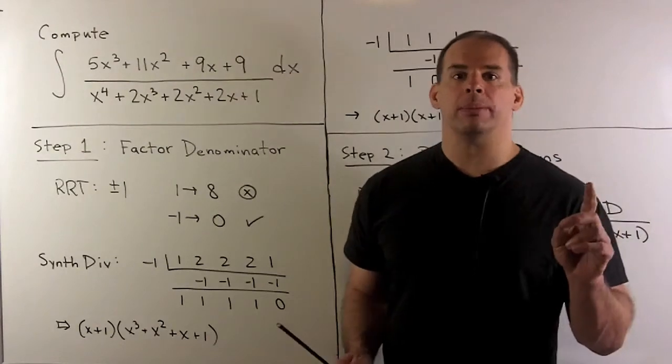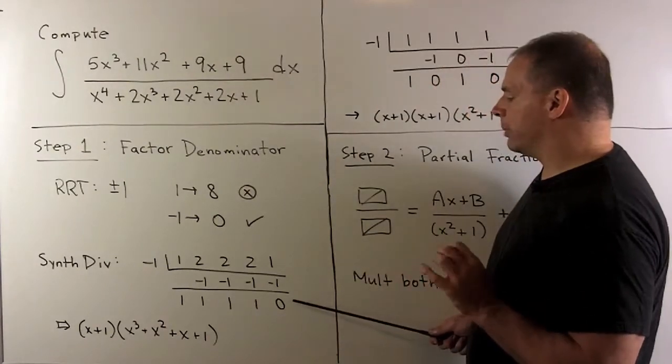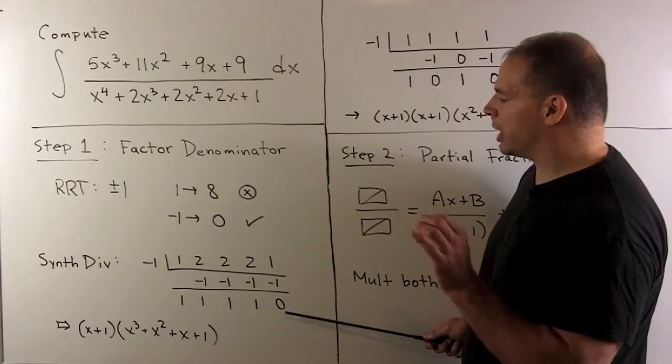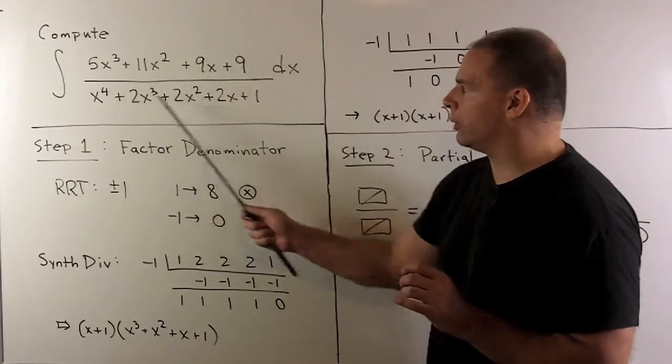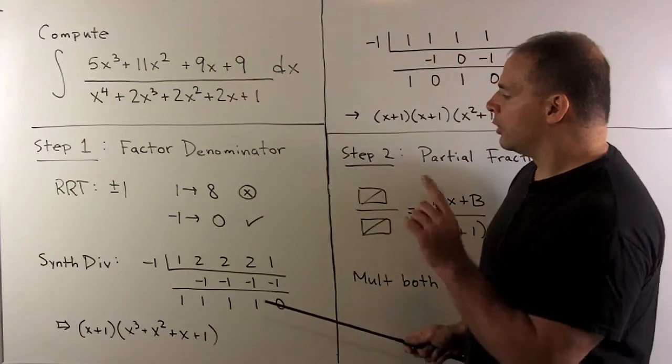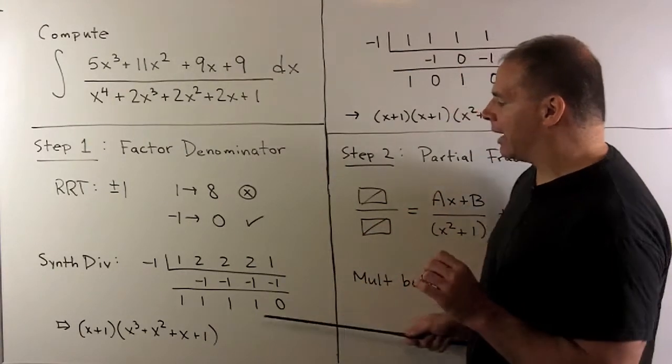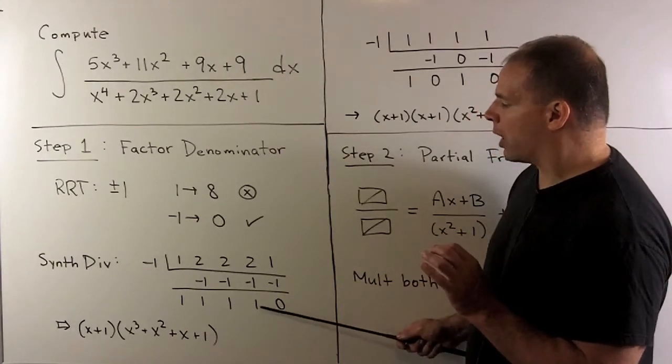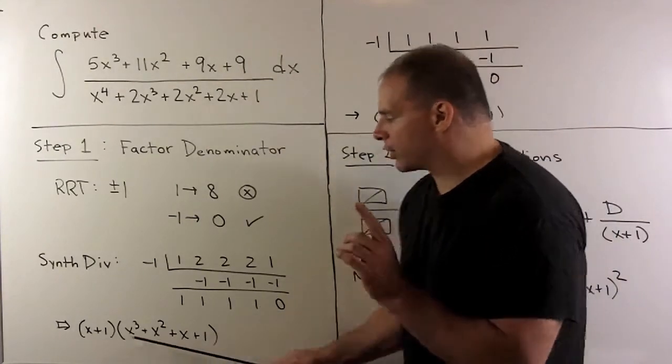To interpret, this last term here is going to be the remainder of the long division. Here we have that x plus 1 divides our polynomial evenly. The remaining factor is just going to be given by these coefficients here. So I have x cubed plus x squared plus x plus 1. That's our first factorization.